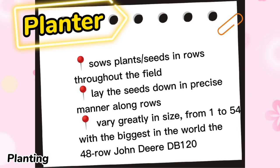Planter is a farm implement usually towed behind a tractor that sows plants or seeds in rows throughout a field. It is connected to the tractor with a draw bar or a 3-point hitch. Planters lay the seeds down in a precise manner along rows. Planters vary greatly in size from 1 row to 54, with the biggest in the world being the 48-row John Deere DB120.